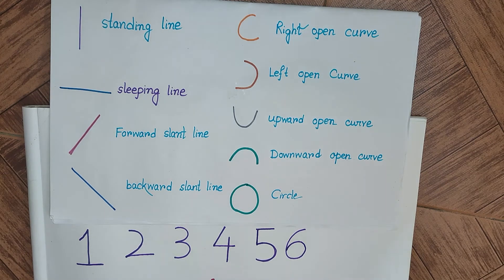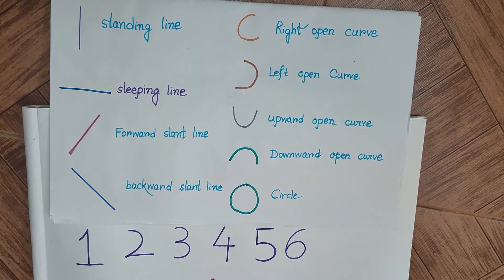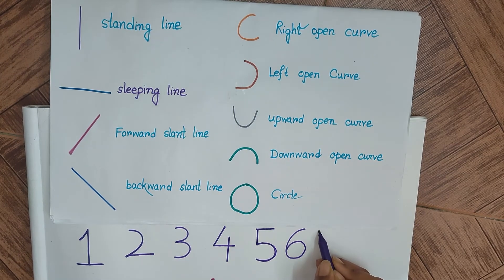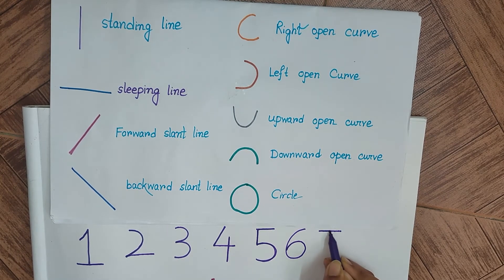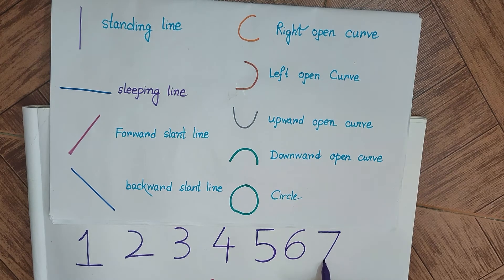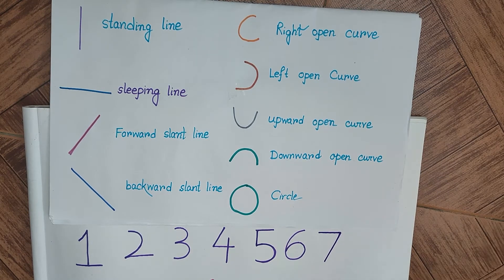Now we will go to number 7. Number 7, which is very easy: a slipping line and from the right of the slipping line, we have a forward slanting line, which gives us number 7.